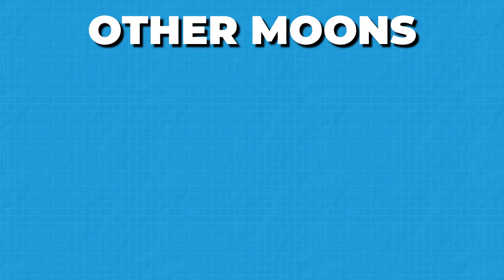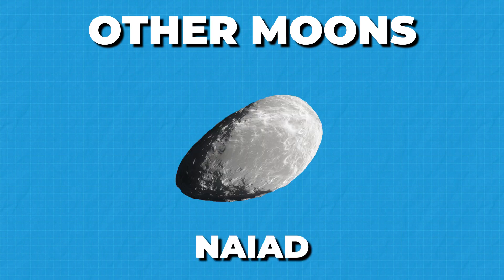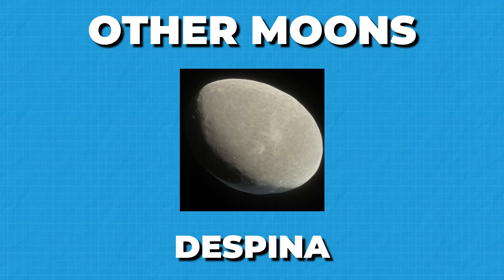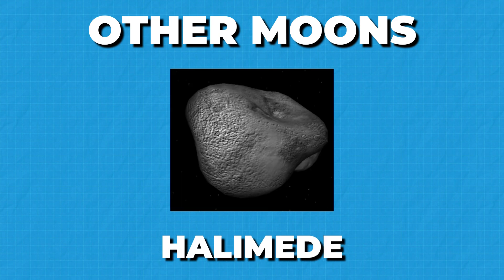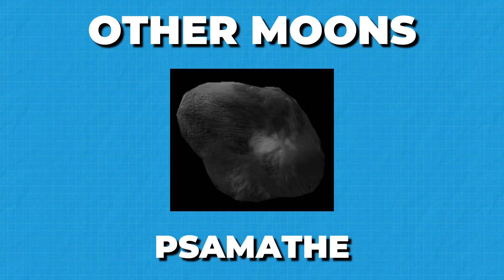Neptune's other moons include Naiad, Thalassa, Despina, Galatea, Larissa, Halimede, Lyomadea, and Samathe.